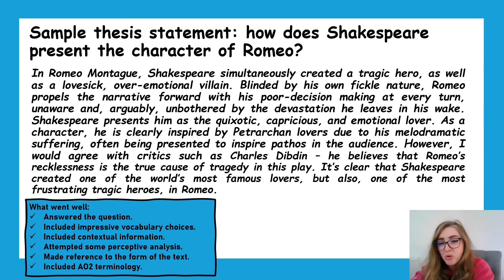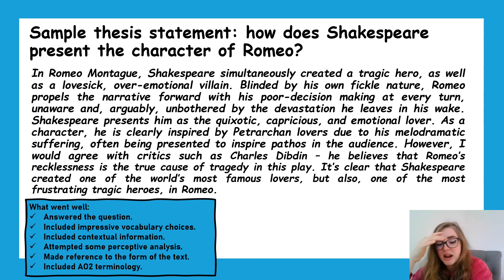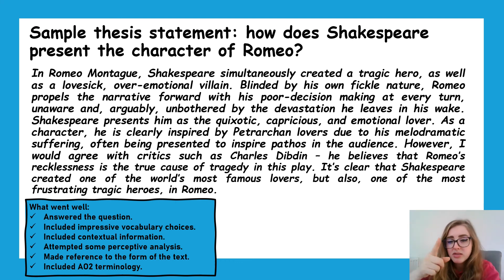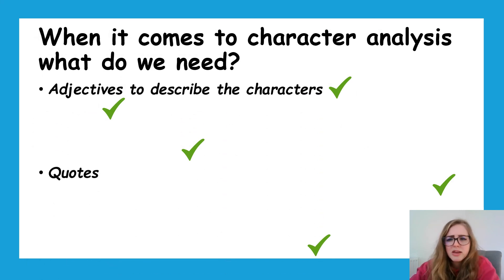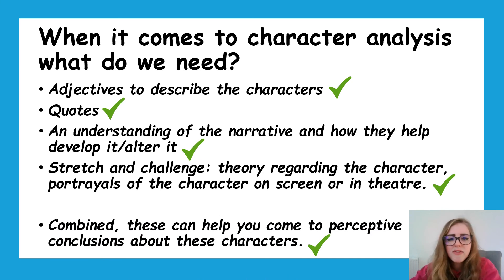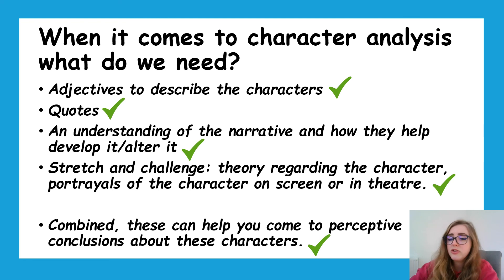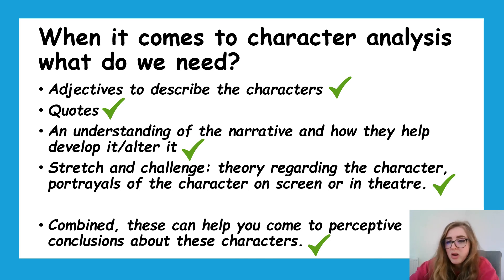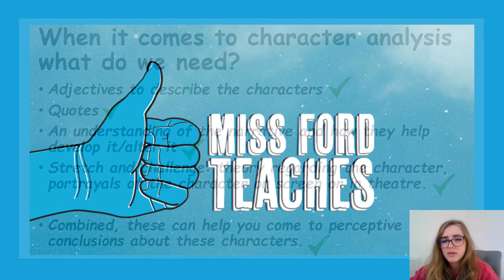What could be improved? Maybe I could have been more specific and said less overall. But generally this is a good thesis because it creates an argument to follow through in the paragraphs. You might want to go away and write your own thesis, or have a go at finishing this essay off using this as a starting point. To summarise, we've found adjectives to describe Romeo, found quotes, written about his importance in the narrative, covered stretch and challenge with theory and portrayals, and combined all of this into perceptive conclusions. Hopefully this has been really helpful — go forward and pick another character or build on what I've written here to write up an essay.